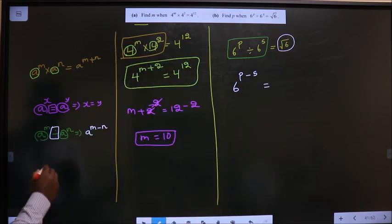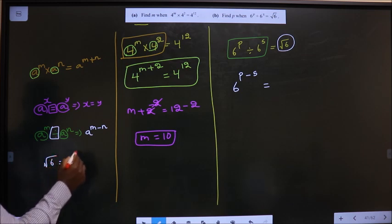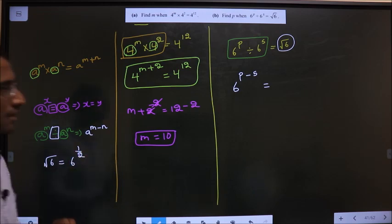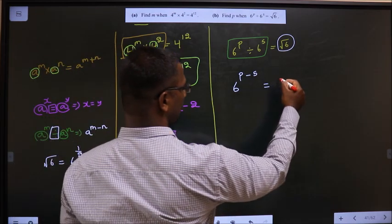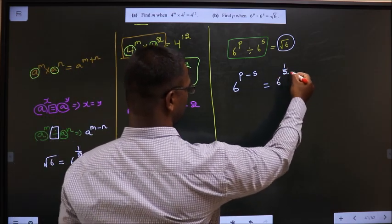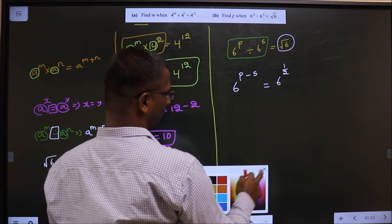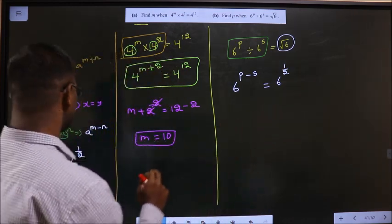Remember, √6 is nothing but 6^(1/2). Replace it here, so in place of √6 write 6^(1/2).